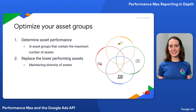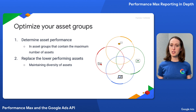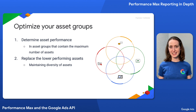Once you've waited at least three to four weeks, our recommendation to optimize your asset groups is to identify and replace your lower performing assets, but only after you've added the maximum number of assets. When it comes to Google's AI optimization, reaching the maximum number of assets is the best way to ensure your asset groups perform well. Only after that point do we recommend replacing assets based on their performance label.